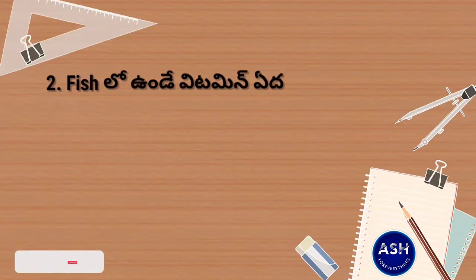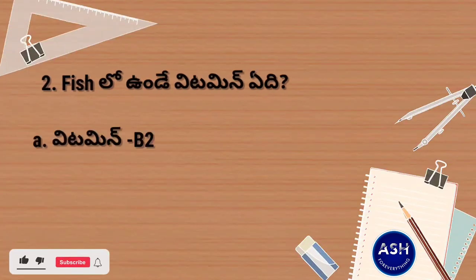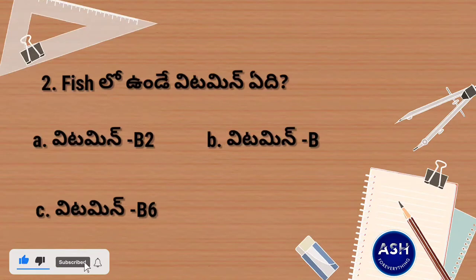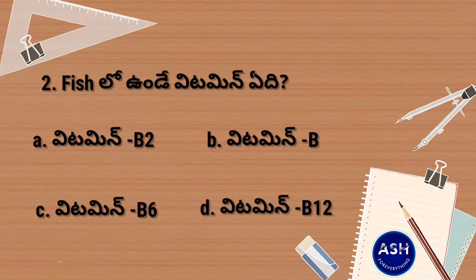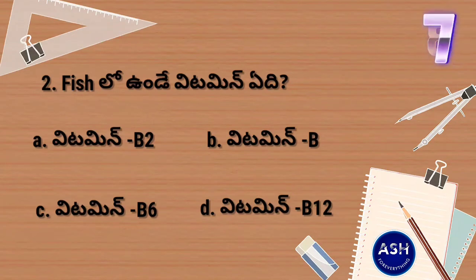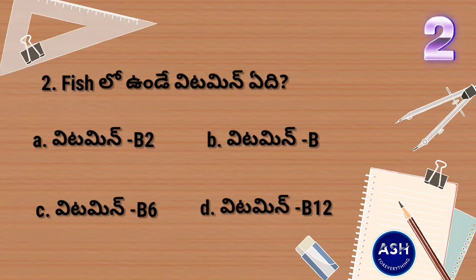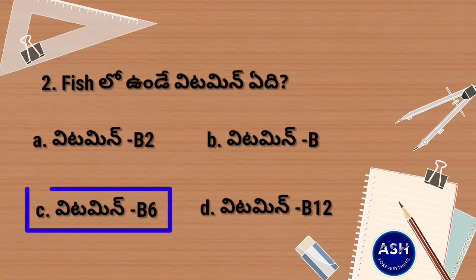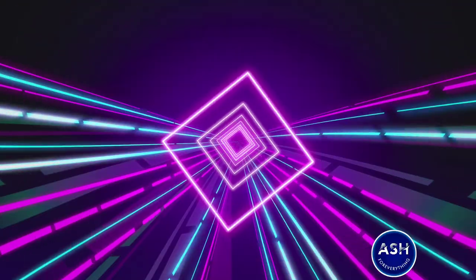Fish liver oil and vitamin A. Option A: vitamin B2. Option B: vitamin B. Option C: vitamin B6. Option D: vitamin B12. Your time starts now. And the answer is option C, vitamin B6.